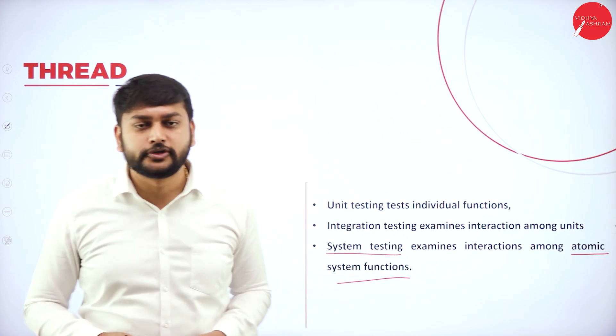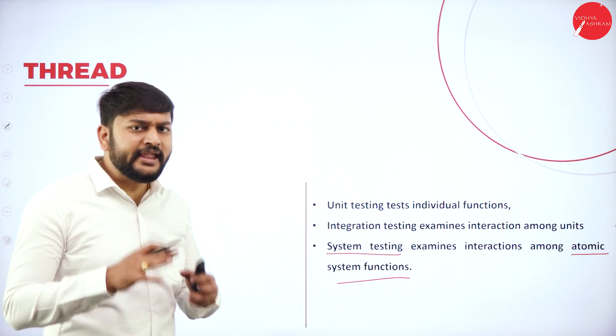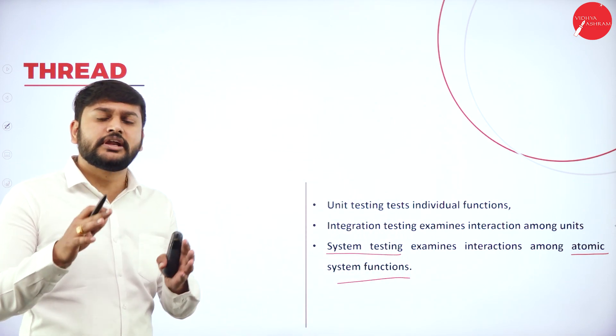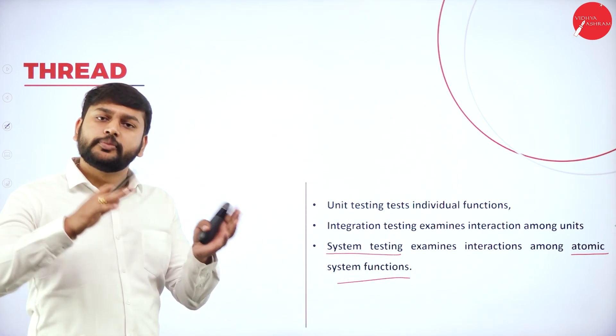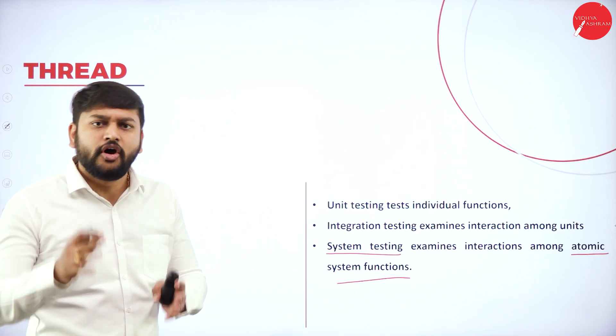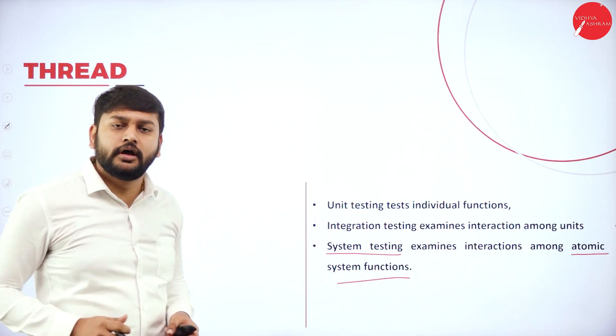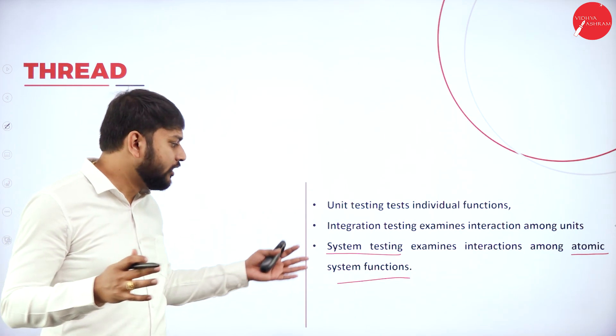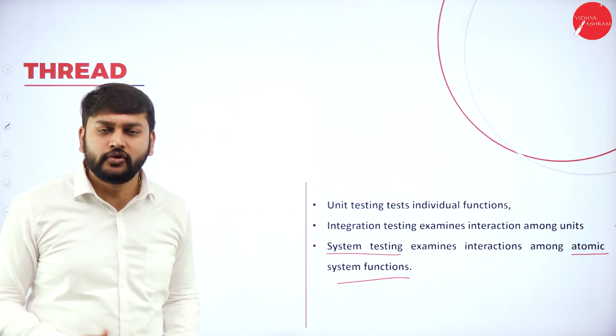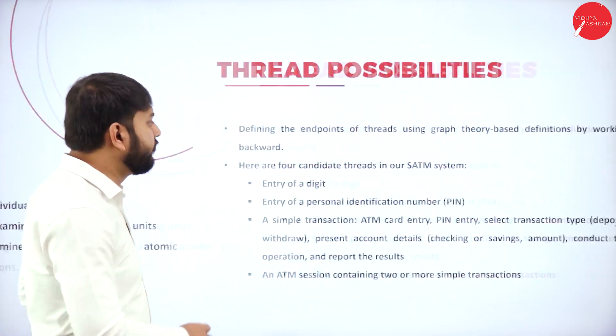Unit testing tests functions individually. Integration testing tests the interaction between units. System testing examines the interaction among atomic system functions. I repeat: system testing examines the interaction among atomic system functions. It concentrates on the expectation of performance of the smaller functions.